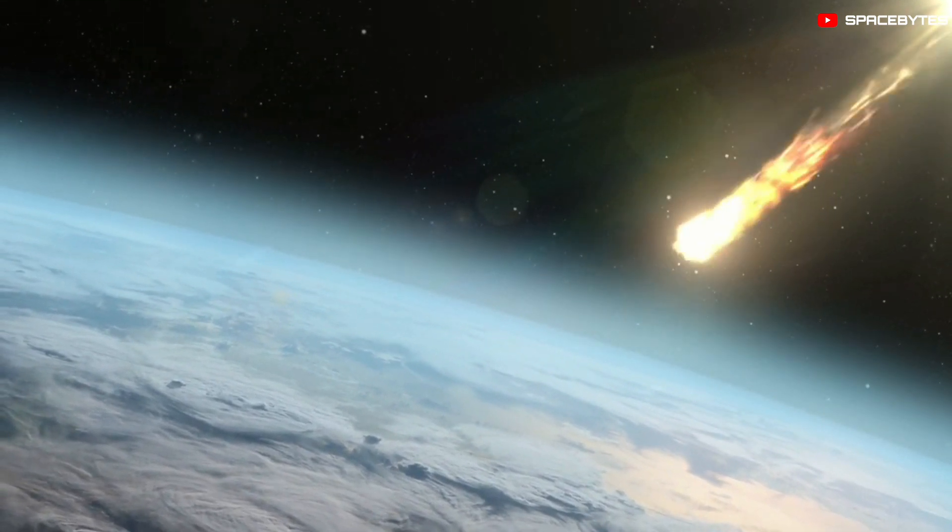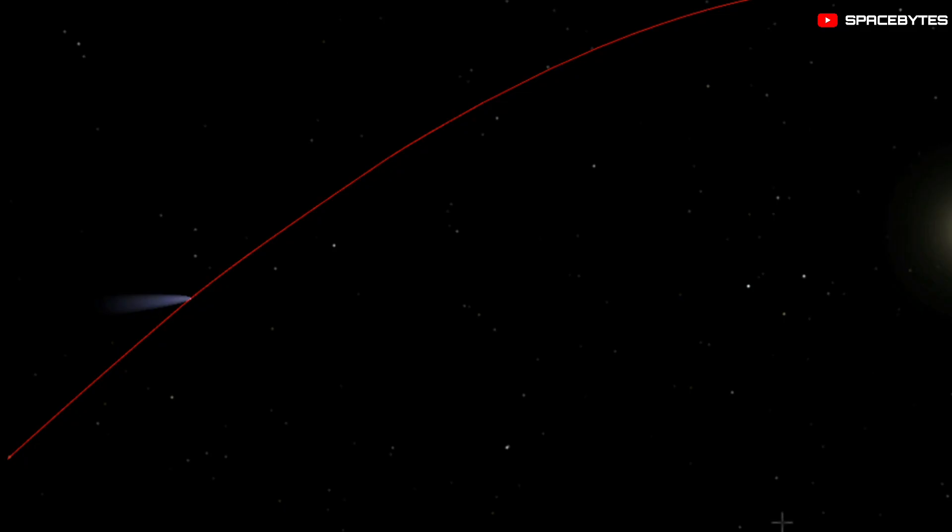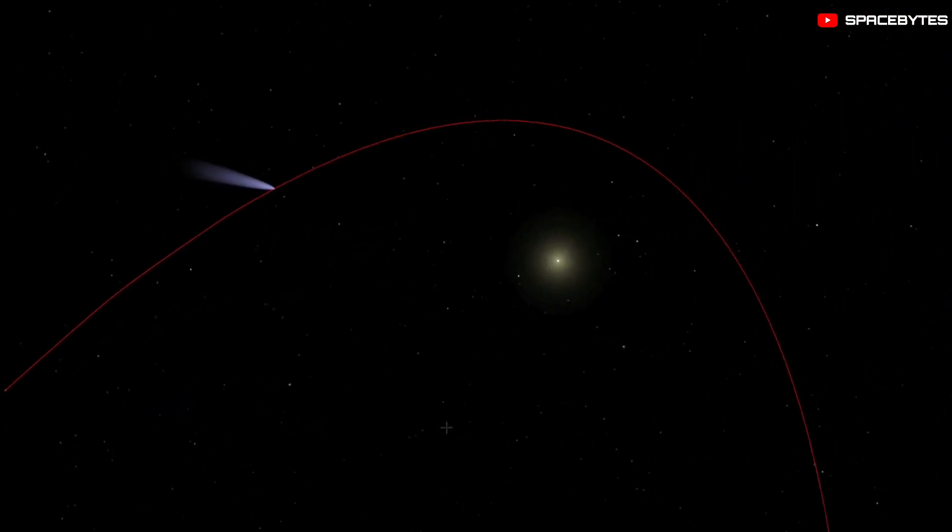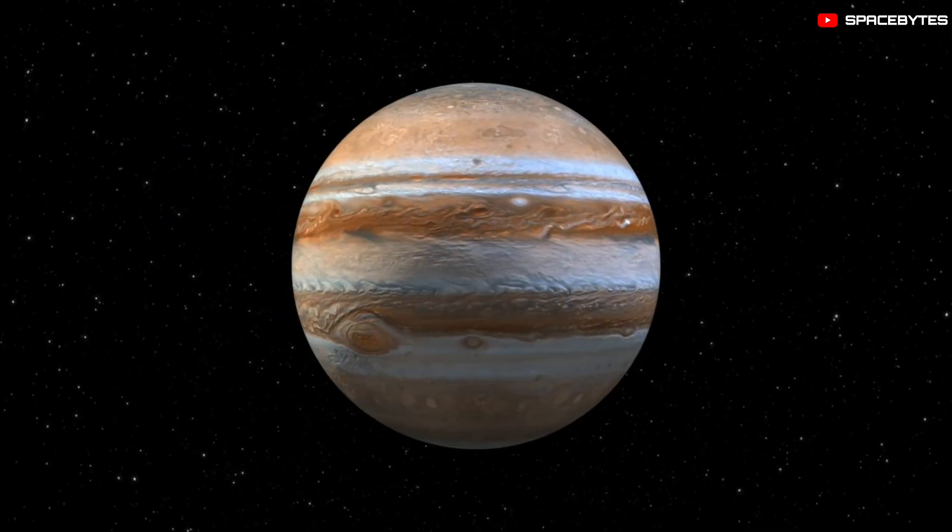As the comet started approaching the Sun, it started to produce a large dust cloud also known as Koma. This dust cloud was large enough that it was almost the same size as Jupiter.